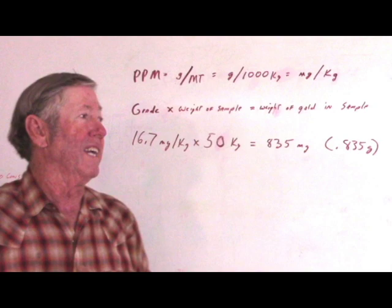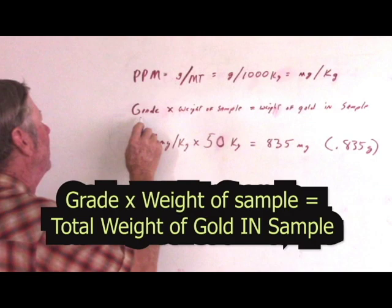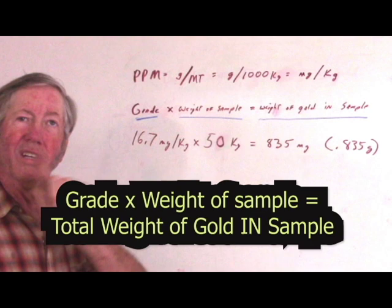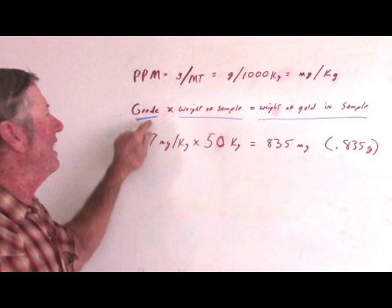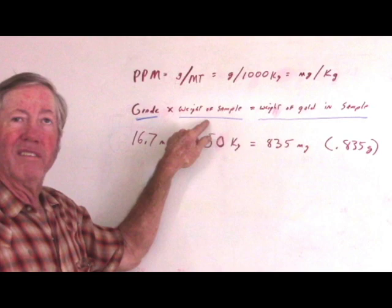This is the mass balance equation. The grade that the assay lab sends you times the weight of the sample equals the weight of gold in the sample. Very simple. There's one complication. This weight of sample and the grade have to use the same units of weight. If this is ounces per ton, then this has to be tons. So fifty pounds will be like one fortieth of a ton.